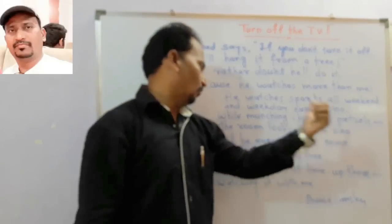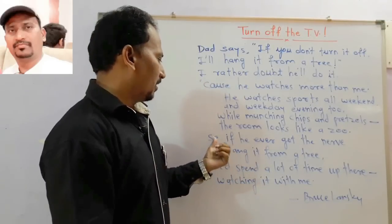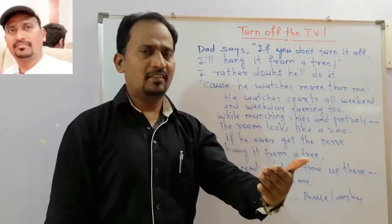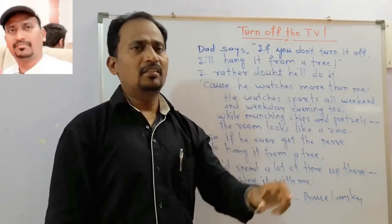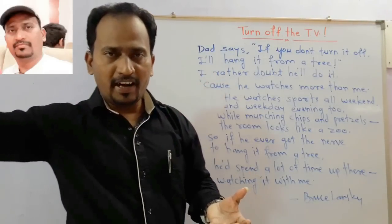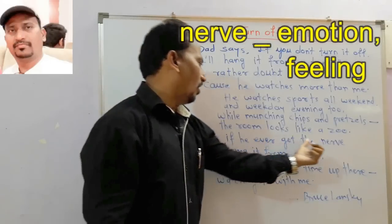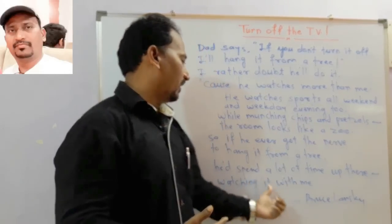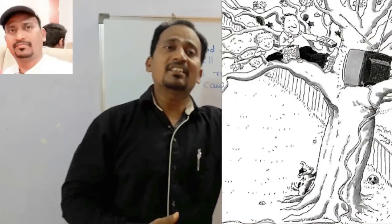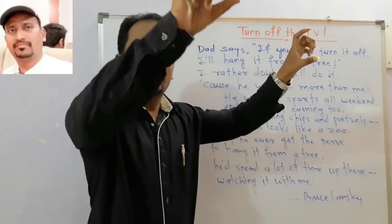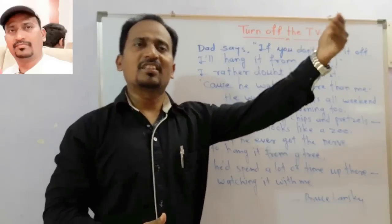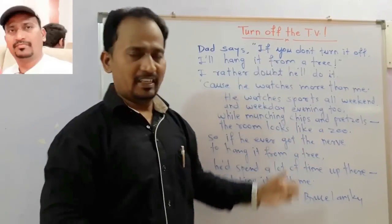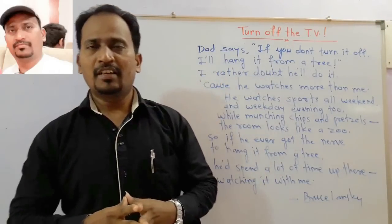At the end of this stanza, the boy says: 'So if he ever got the nerve to hang it from a tree' — nerve means emotion, feeling — if emotionally father hanged the TV from a branch of the tree, then 'he'd spend a lot of time up there watching it with me.' The father would spend maximum time watching TV with the boy up in the tree. So very humorously the poet has described. This poem is written by Bruce Lansky, one of the American poets.